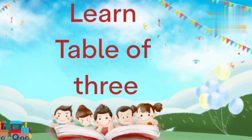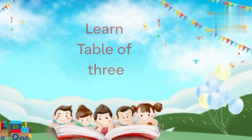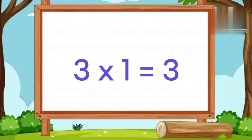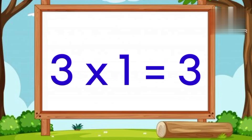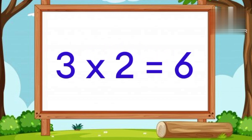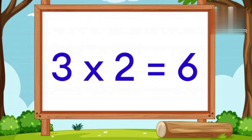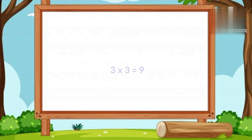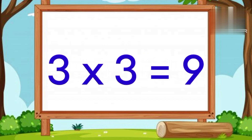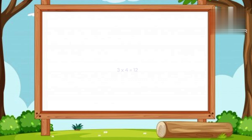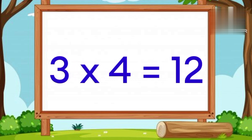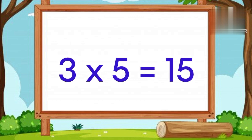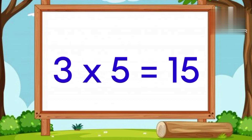Table of Three. Three One's a three. Three Two's a six. Three Three's a nine. Three Four's a twelve. Three Five's a fifteen.